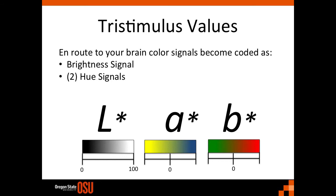Alternatively, a more thorough method of assessing color is being implemented by the ASBC. This involves a slightly more complicated measurement; however, with the proper equations, a multiple wavelength assessment can be converted into a tri-stimulus value. Tri-stimulus, or three stimuli, refers to the way your brain interprets color. En route to your brain, color signals are coded as a brightness signal and two separate hue signals. Commonly, this assessment of color is referred to as the LAB method.